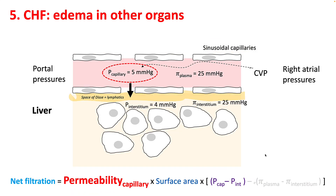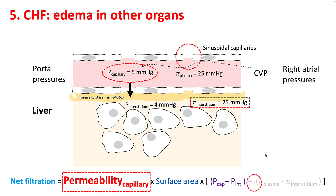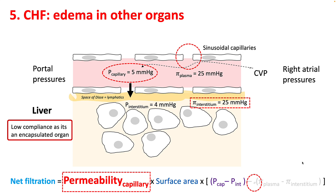In the liver, capillary pressures are much lower than other organs because blood flow is mostly from your portal side. However, an increase in central venous pressure can increase your capillary pressures. These capillaries are very leaky with very high permeability, and the interstitial oncotic pressure is almost similar to plasma oncotic pressure. Because of the low compliance of the liver, intrahepatic pressure can rise rapidly, but this is offset by lymphatics. In advanced heart failure you can see congestive hepatopathy, evidenced by elevated transaminases.